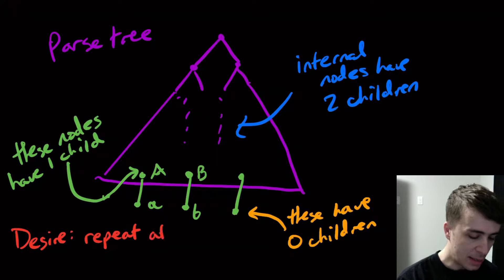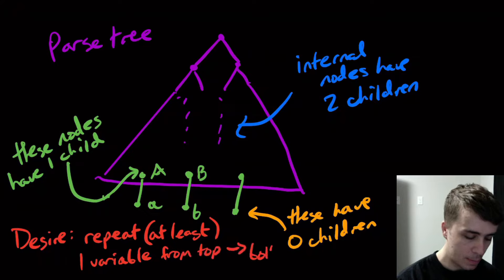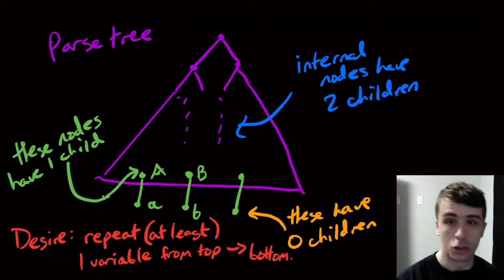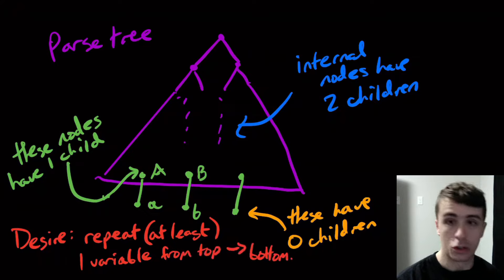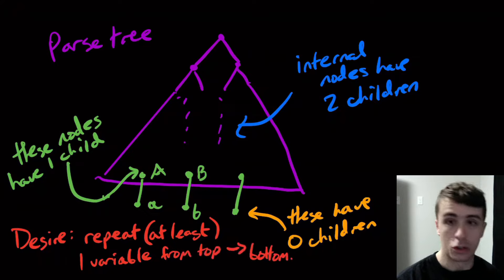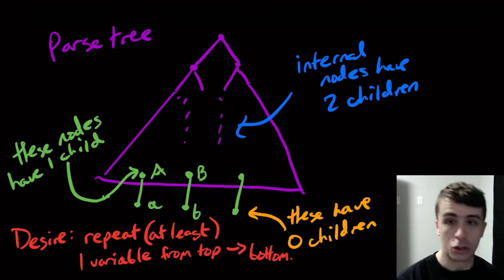What we want is to make the tree big enough that we repeat variables going from the top to the bottom. We want to repeat at least one variable from the top to the bottom of the tree, which gives some kind of repeating behavior — similar to when we repeated the state in the DFA. However, if the tree is short, meaning the string we're generating is short, there could theoretically be no repetition of a variable going from the top to the bottom.